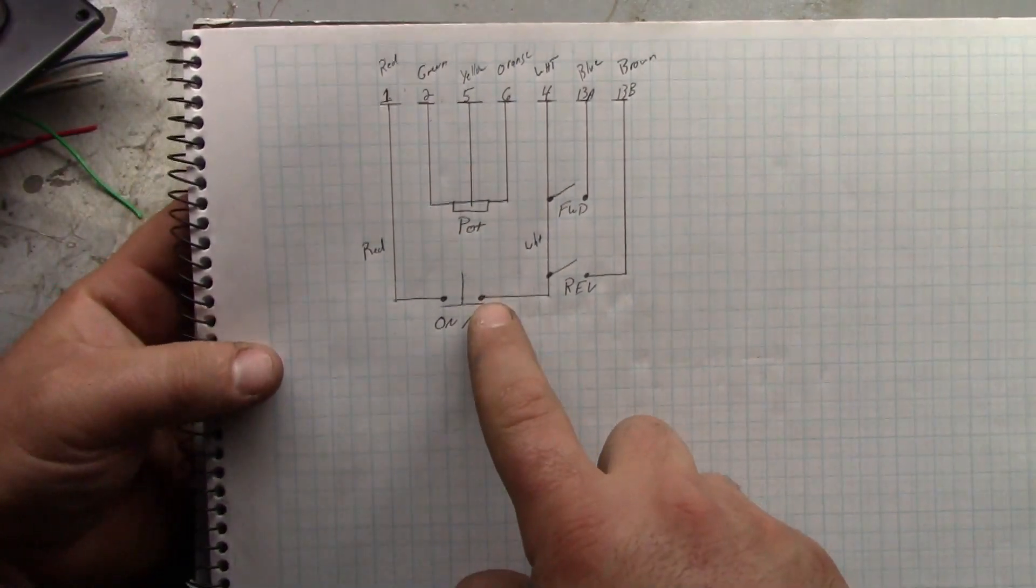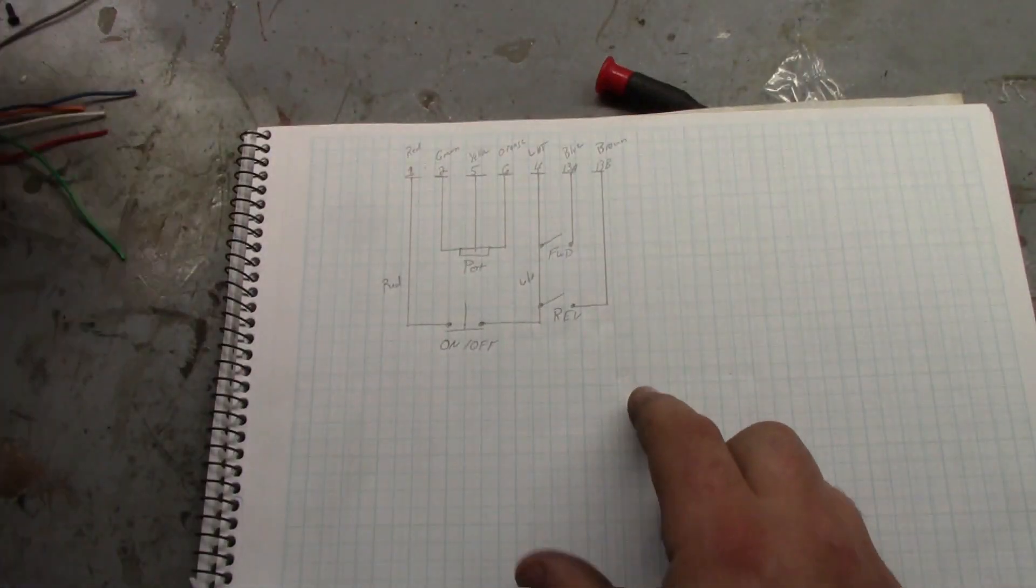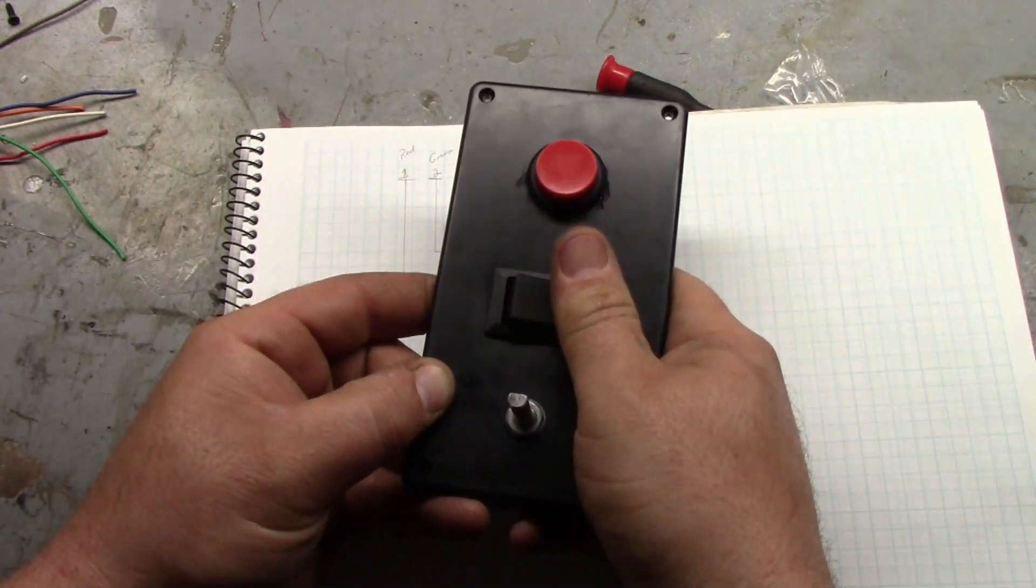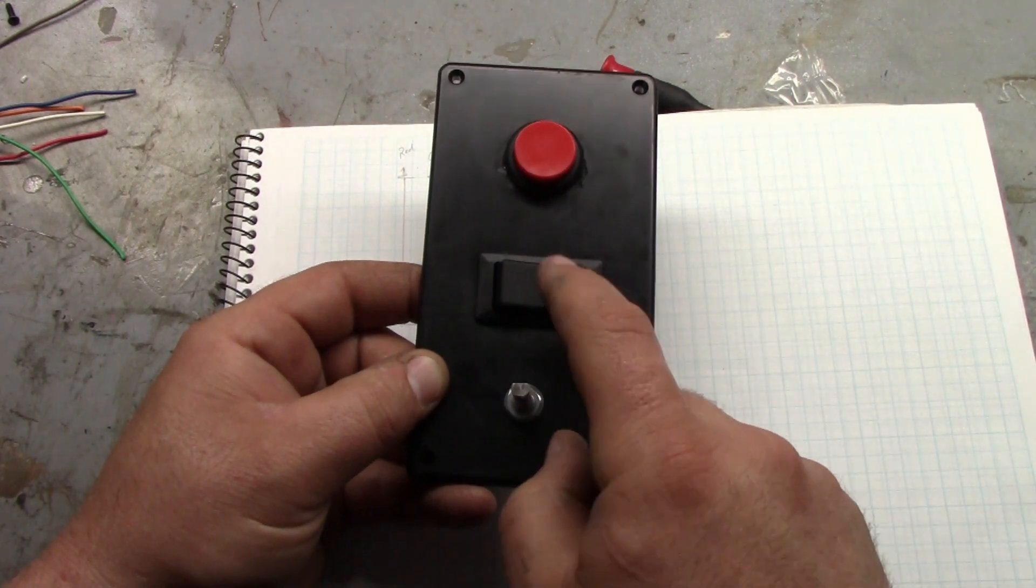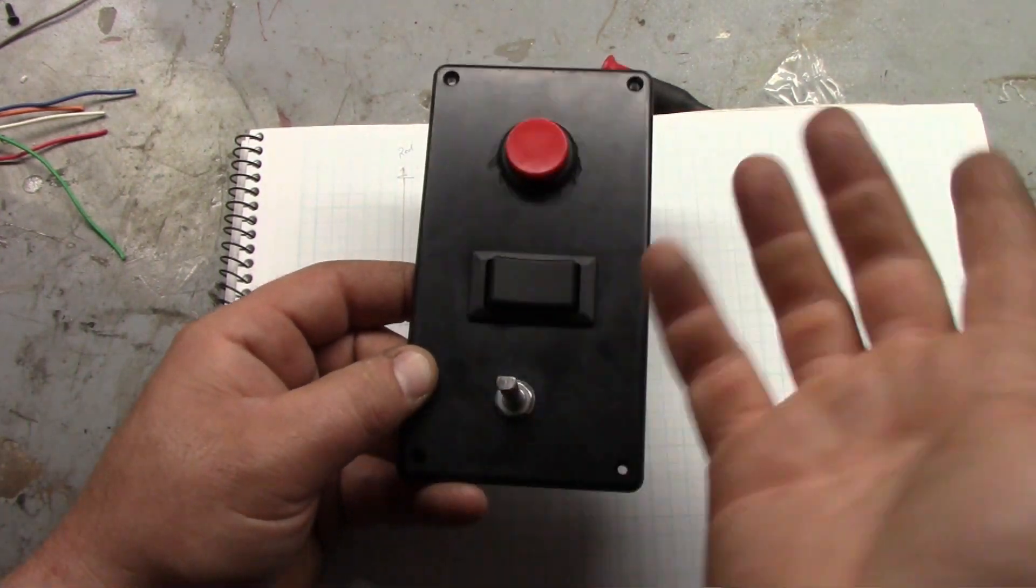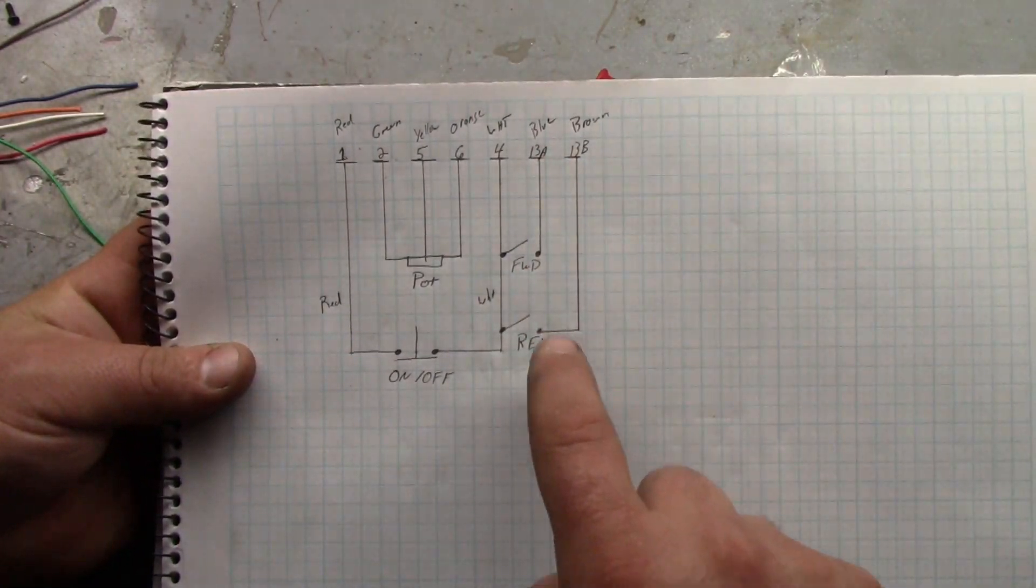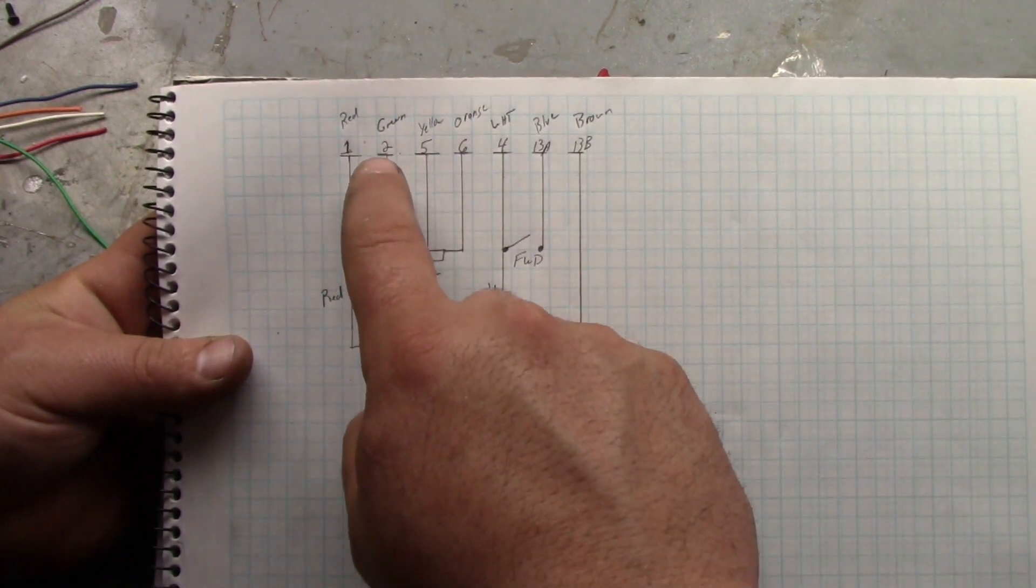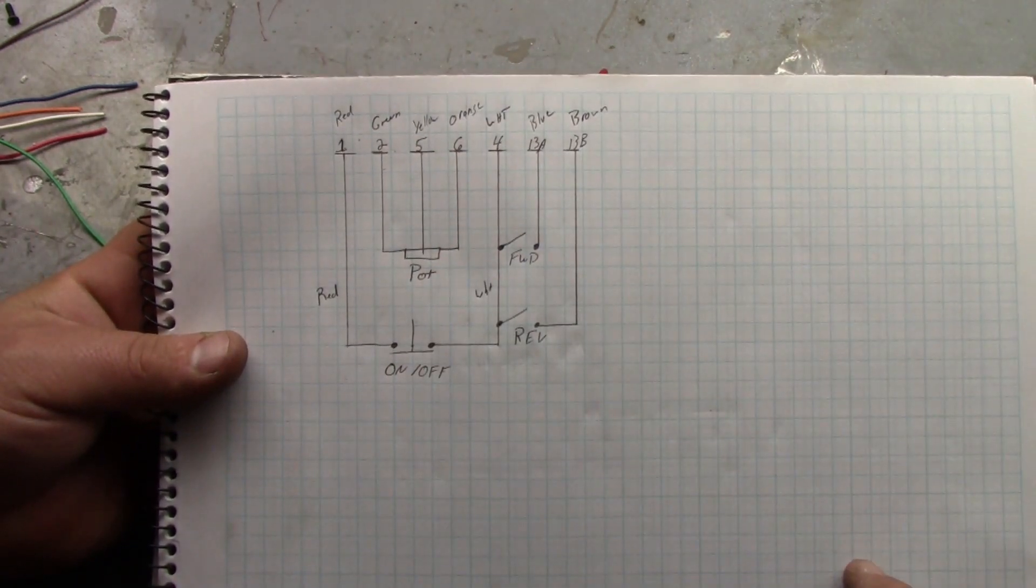One is going to come off and go to our latching push button on-off switch. The other side of that switch is going to feed the common side of our forward-reverse switch. So center off, forward, reverse. This is a double pole double throw switch. You can get by with a single pole double throw switch. The other side of those switches, forward goes to 13A, reverse goes to 13B. Potentiometer two goes to one side, five goes to the middle wiper, and six goes to the other side.